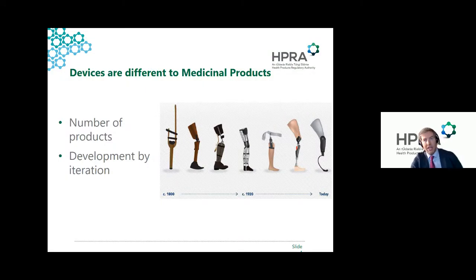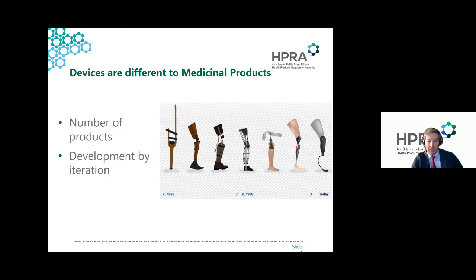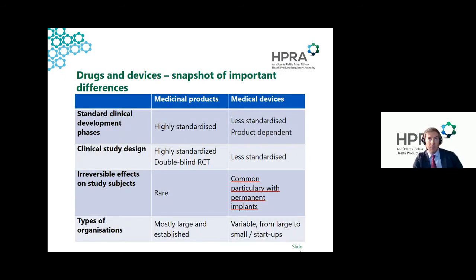When you consider medicinal products and medical devices in terms of the regulatory system, two things can be quite prominent. First, we have a huge number of medical devices in Europe — running into the hundreds of thousands — whereas drugs run to the tens of thousands. Second, iteration — making small changes to a product over time — happens routinely with medical devices and is far less prominent with medicinal products. This is an important consideration when we talk about the medical device lifecycle.